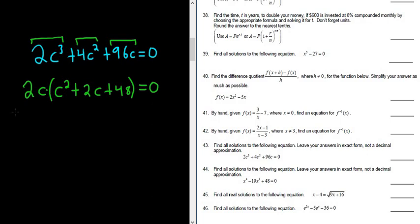So now we have a product equal to 0, so we just set each factor equal to 0. So 2c equals 0, and c squared plus 2c plus 48, all of this is equal to 0. In the first equation, we can divide both sides by 2. So we get c equals 0.